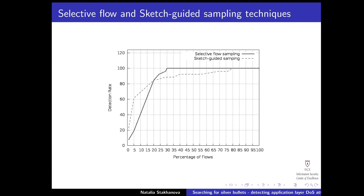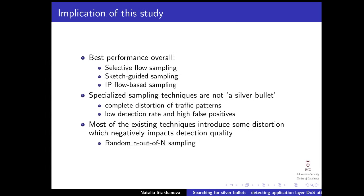So I sort of mentioned the implication of this study. The selective flow and the sketch-guided sampling seem to be quite good for detection of application level denial of service attacks. Interesting part though, none of these techniques were developed for intrusion detection. These are generic techniques that were developed for load balancing at the network level. The techniques that were specifically developed for intrusion detection approach, none of them actually performed well for us.